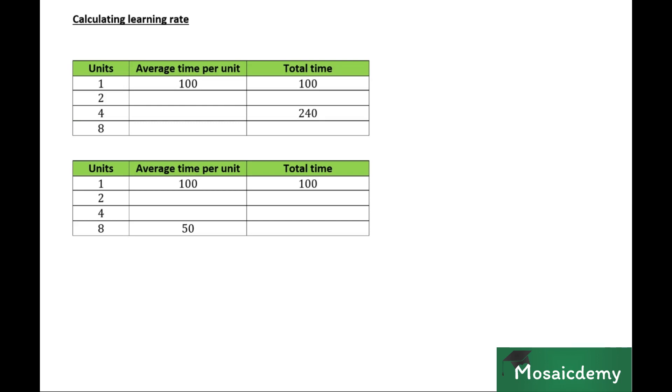So let's assume we have a company. They noted down that their first unit took a total time of 100 hours to make and they keep recording the time. They find out that the first four units took a total time of 240 hours to make. So they can now use these numbers to calculate the learning rate.